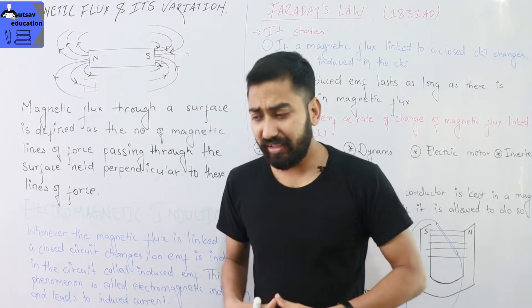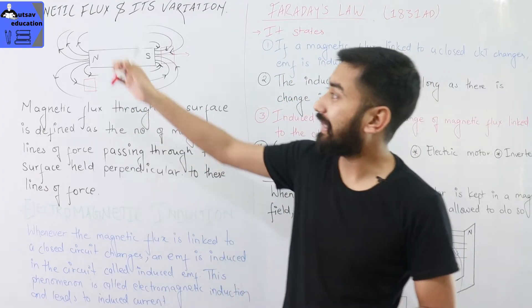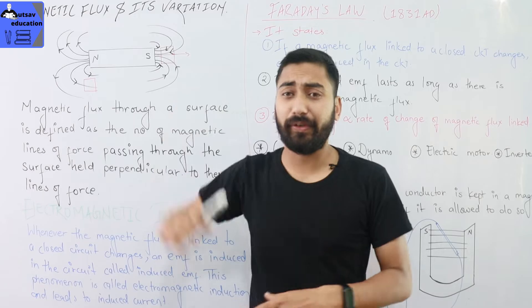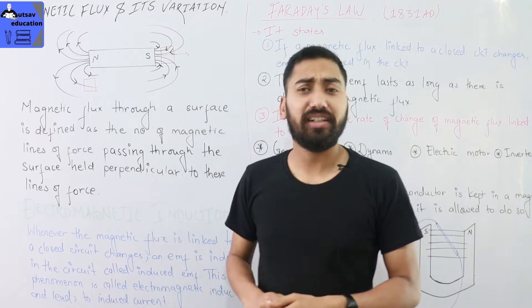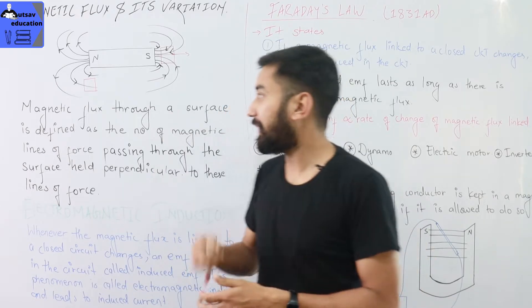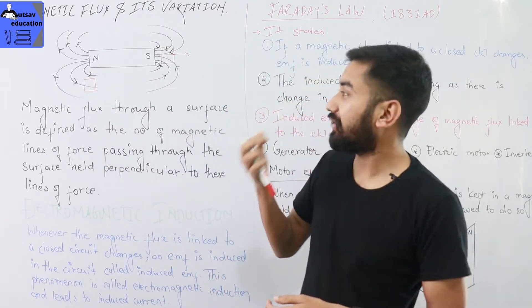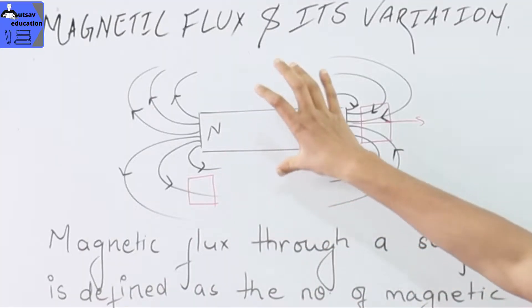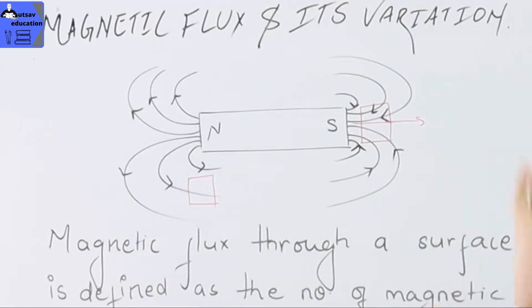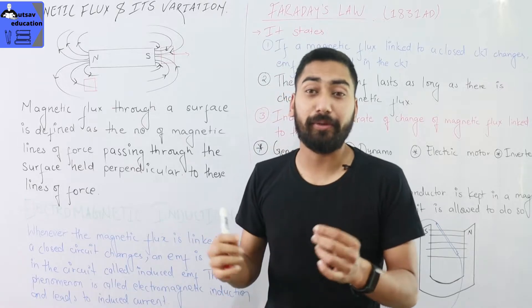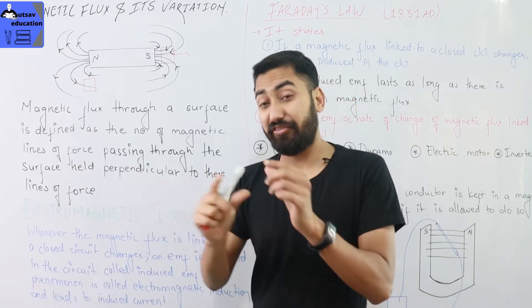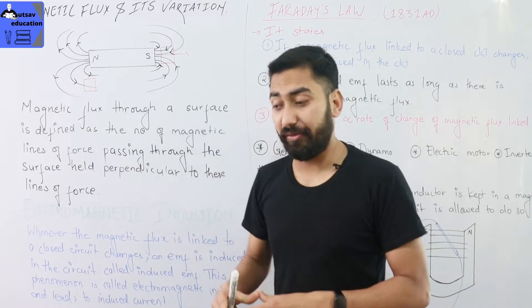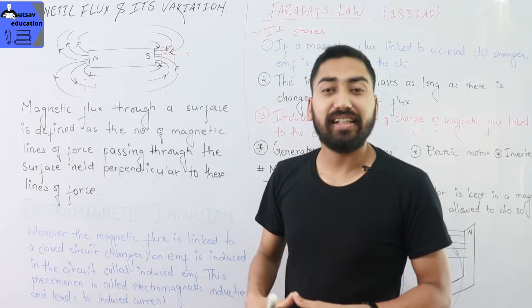First we have magnetic flux. This is a bar magnet. We have magnetic lines of force, which are invisible imaginary lines of force.